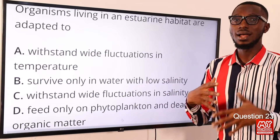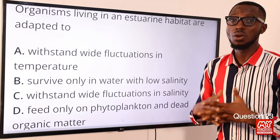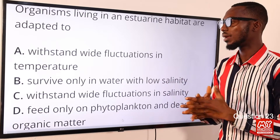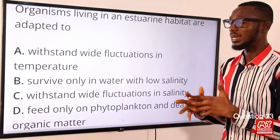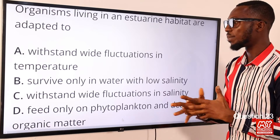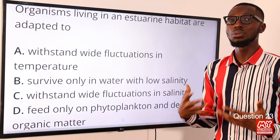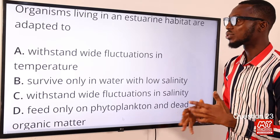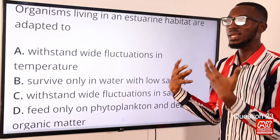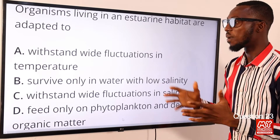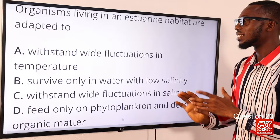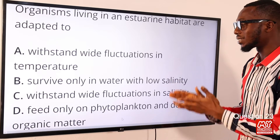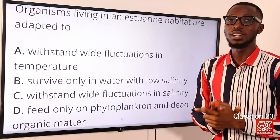Animals found there, like annelids, have body cells with a wide tolerance for this fluctuation. Some of them can adapt in the environment by having a built-in osmoregulatory mechanism, while some have fairly impermeable body surfaces. So the correct option is that they withstand wide fluctuation in salinity — that is option C.